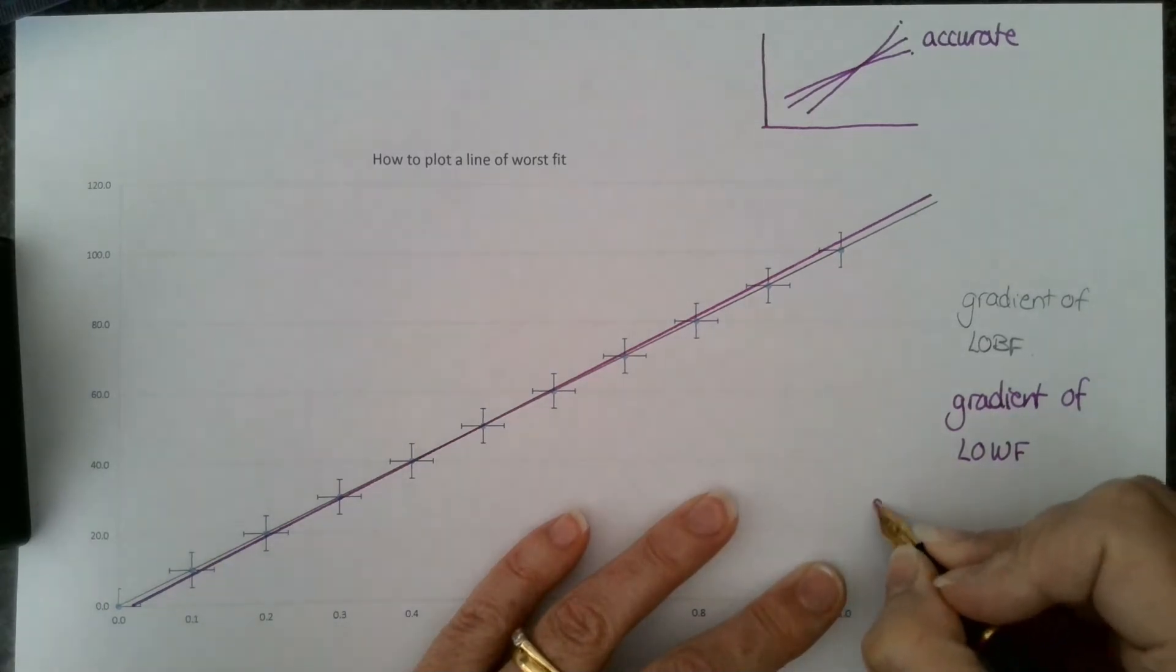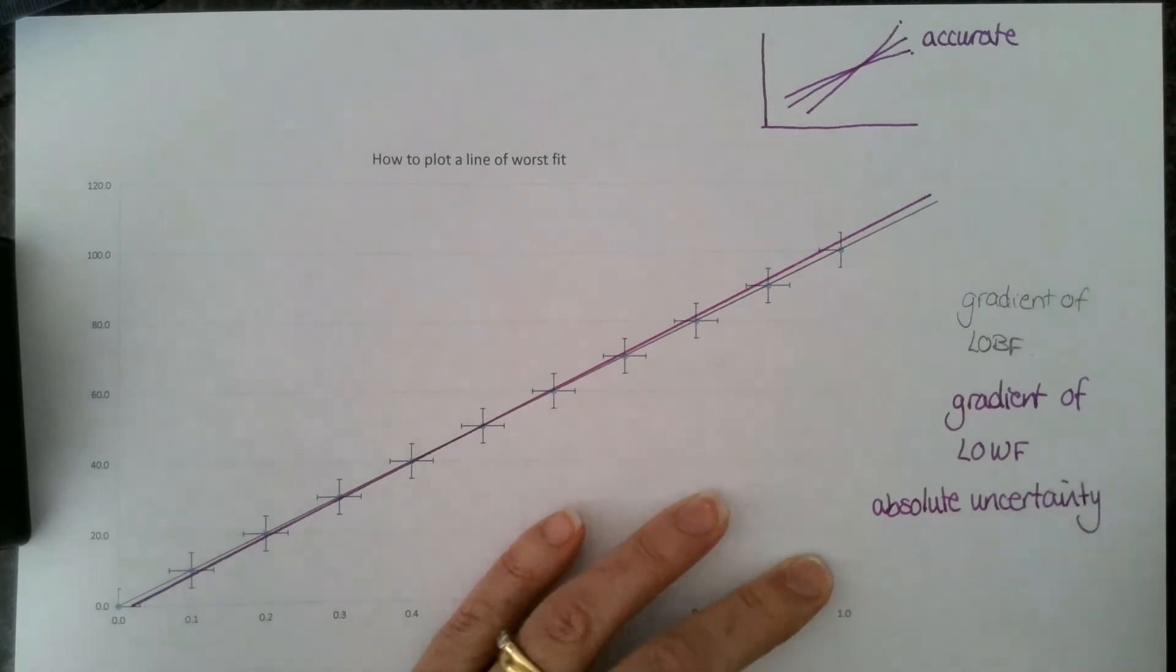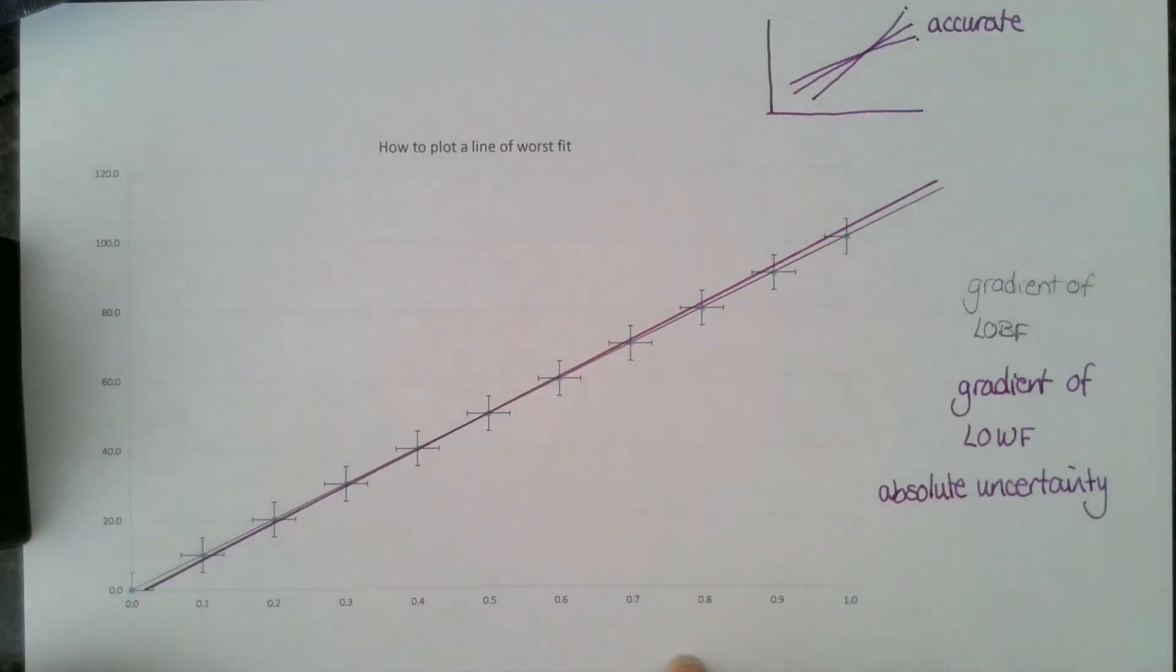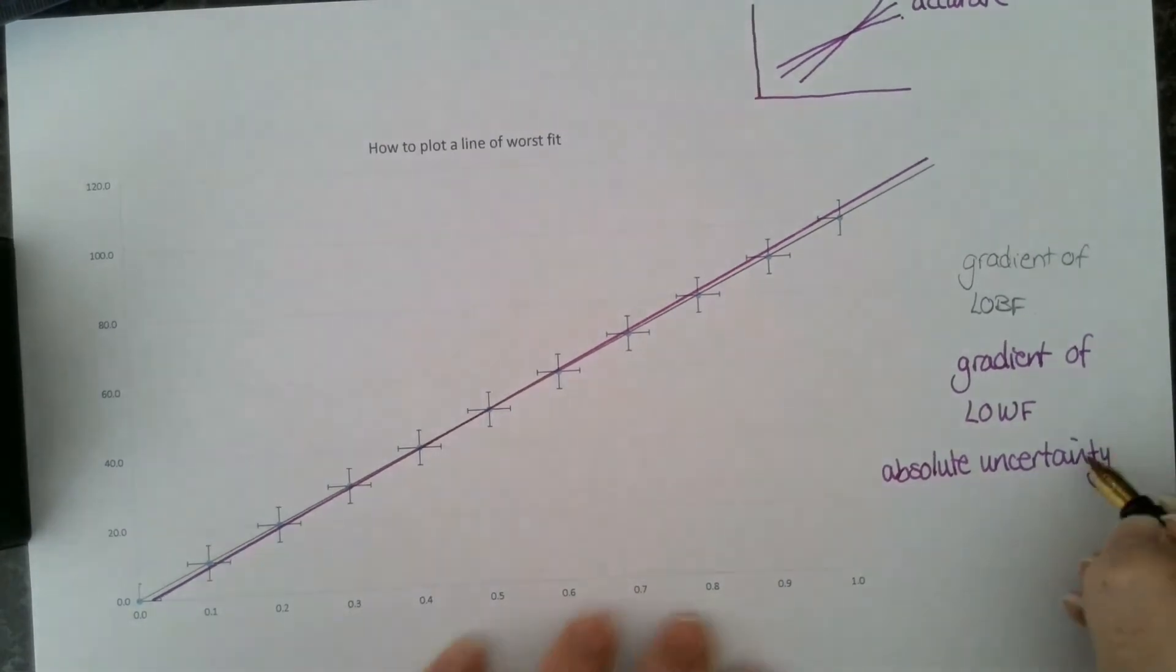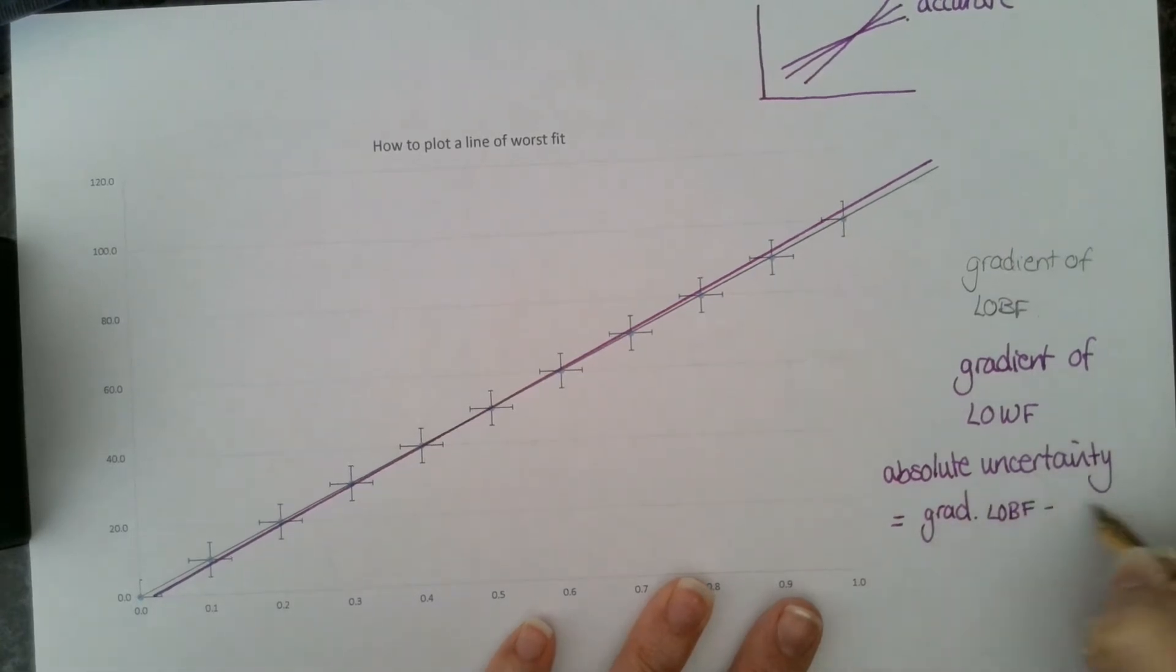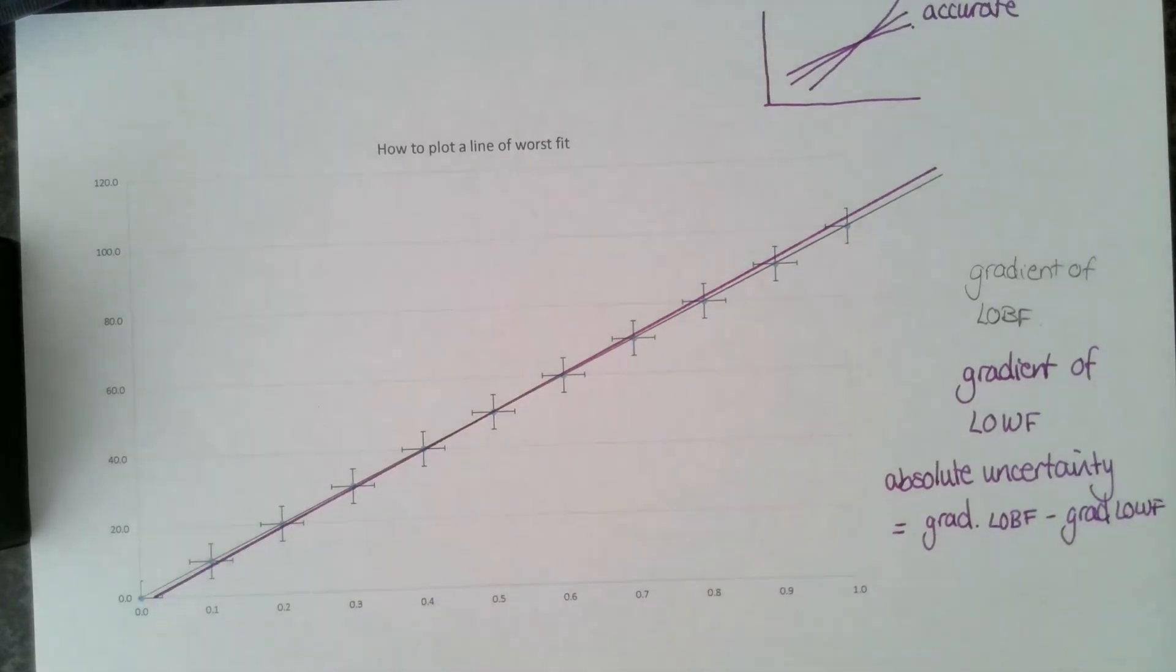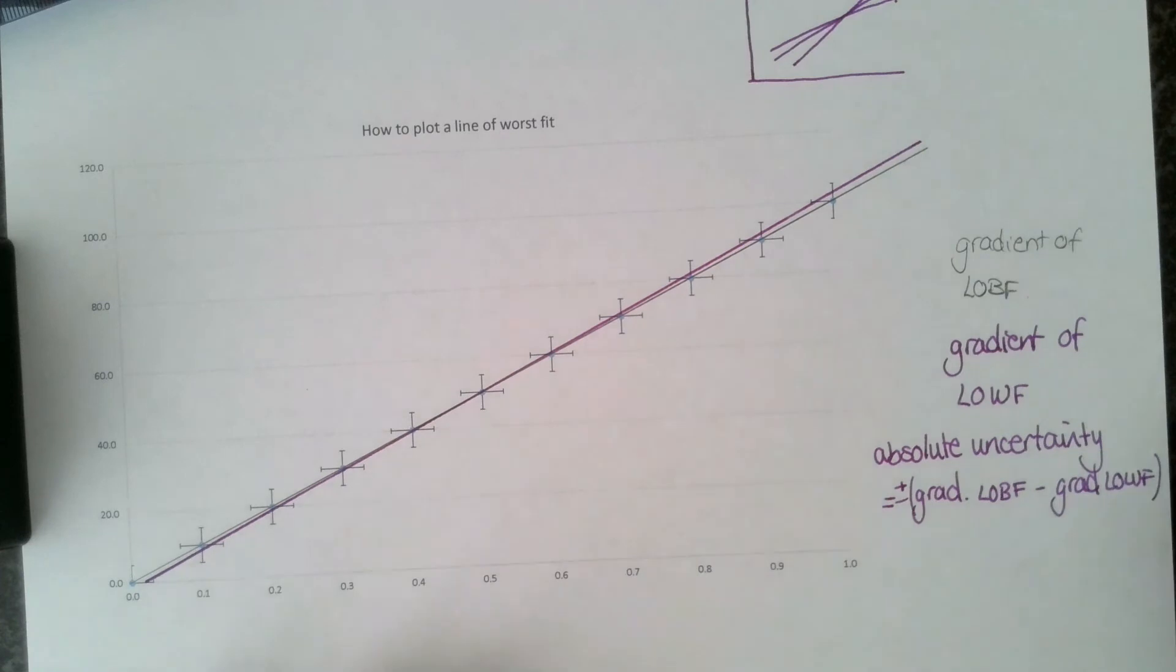To find the absolute uncertainty, remember absolute uncertainty is going to be a value in terms of the gradient. So if this was Newtons per meter, the absolute uncertainty in the gradient value would be in Newtons per meter. The absolute uncertainty equals the difference between the gradient for the line of best fit and the gradient for the line of worst fit. That's going to give you absolute uncertainty, plus or minus either side of the line of best fit.